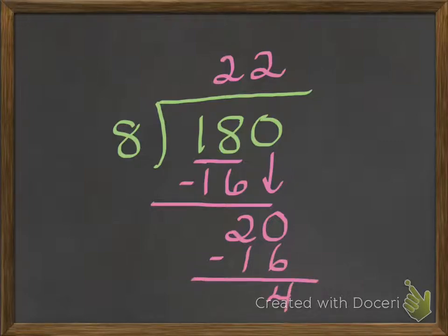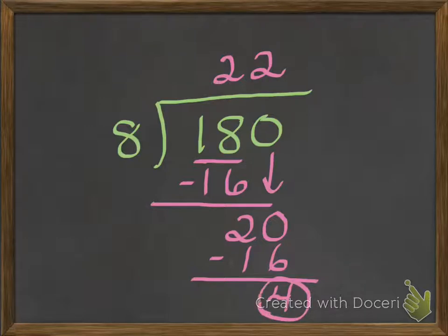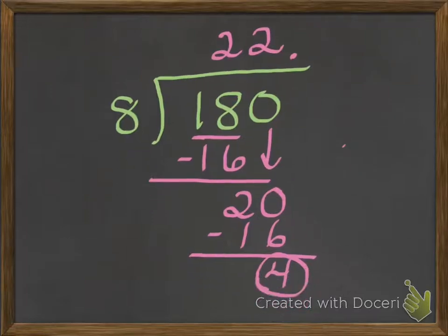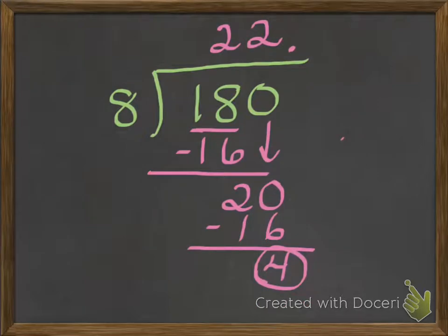This is the point where you would usually put a remainder of four. Well, we're not going to do that. If we get here and the number is not zero yet, so we're not done — instead of writing a remainder, where you would usually write that R, you're going to write a decimal point. So instead of an R for remainder, you're going to put that decimal point.